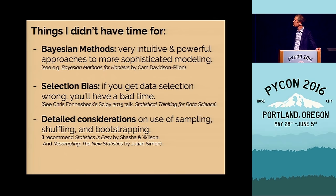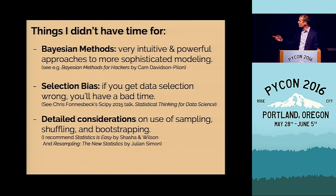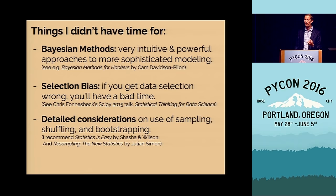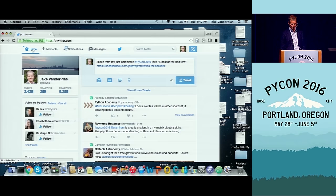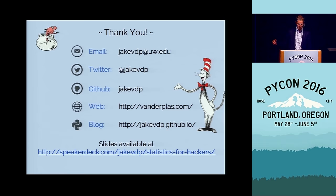For detailed considerations of these sampling, shuffling, and bootstrapping approaches, I'd recommend 'Statistics is Easy' by Shasha and Wilson, and 'Resampling: The New Statistics' by Julian Simon. These are excellent ways to dig into the subtleties of these approaches. If you want to look at these slides online, I just tweeted the link. I'm at JakeVDP. Thanks very much — it was a pleasure to be here. We'll have some questions.